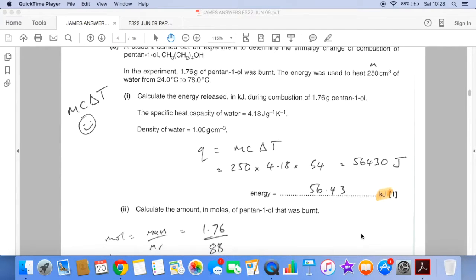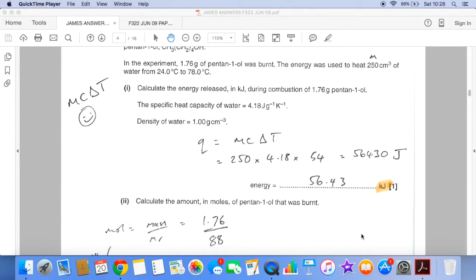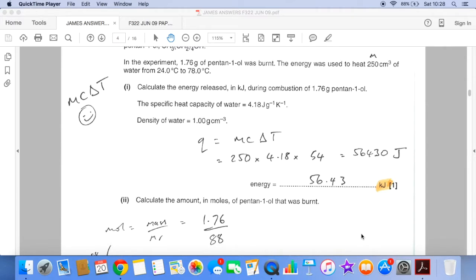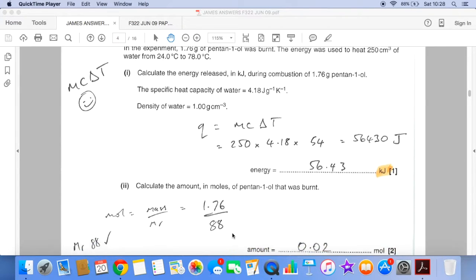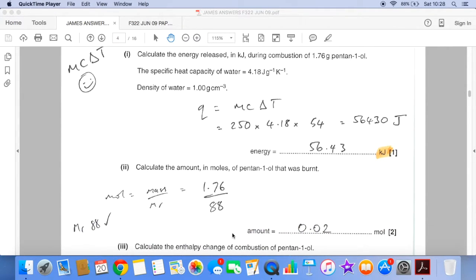How many moles of pentan-1-ol have been burnt? So moles is mass over MR, so we've got 1.76 grams of being burnt, and the MR is 88, and so that's 0.02 moles. There was even a mark there for calculating the MR of pentan-1-ol.